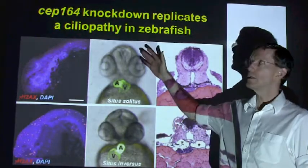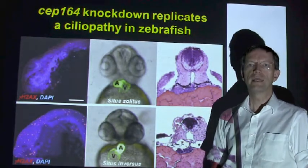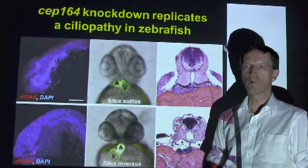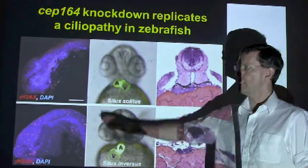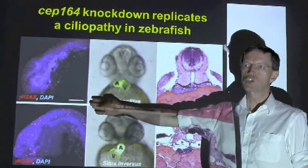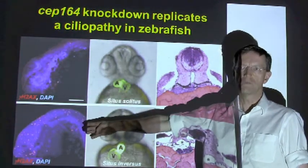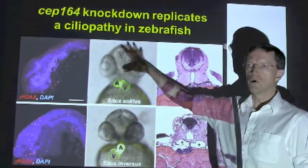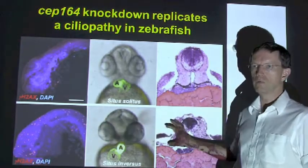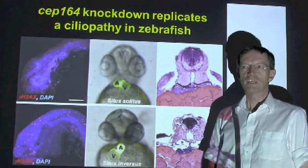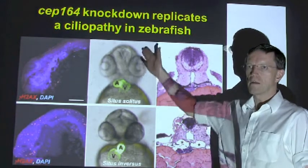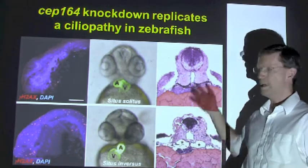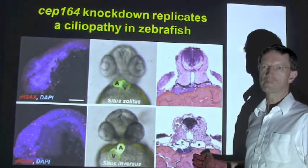We then demonstrated in the zebrafish model of CEP164 knockdown that both phenomena can be observed upon knockdown of CEP164. That is, there was increased sensitivity to DNA damage, as shown here by increased expression of the DNA damage protein gamma-H2AX, where the upper row represents the negative control and the lower row the knockdown condition. But there was also a recapitulation of typical ciliopathy phenotypes, including situs inversus with aberrant heart looping and bilateral kidney cysts, as shown here by these hollow spaces.